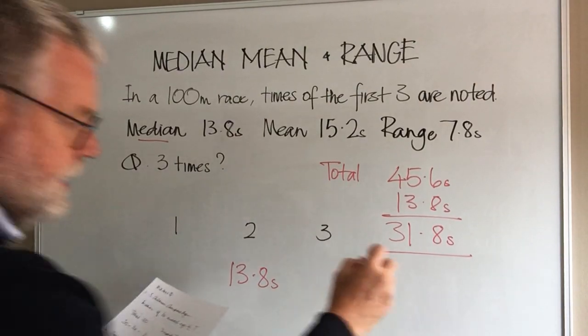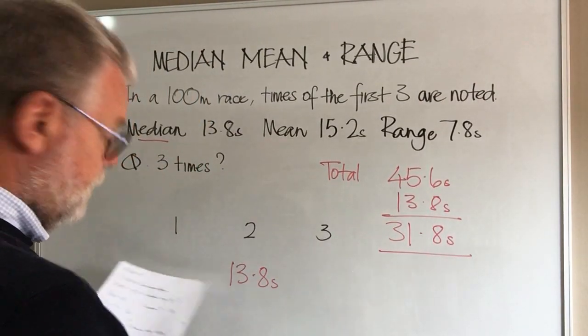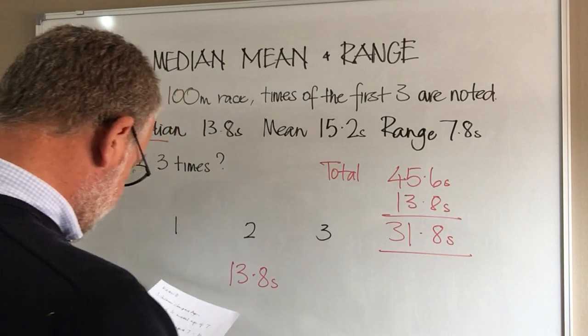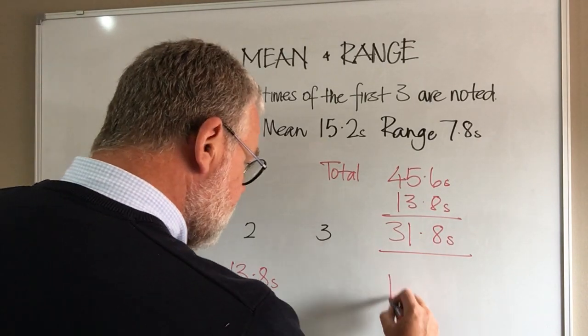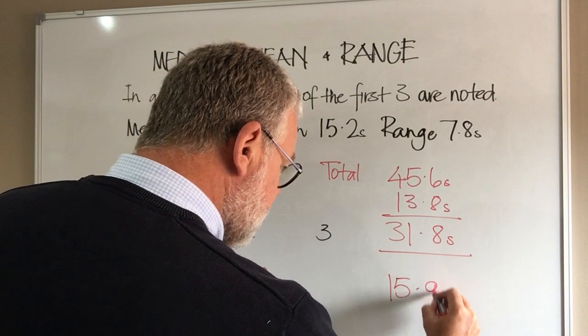If we split that in half, because we're dealing with two runners, we get 15.9 seconds.